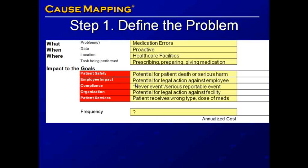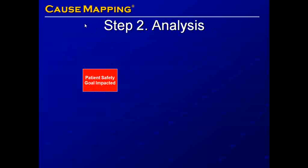The frequency will be dependent on the individual facility, so we'll just put a question mark for now. This is step one — define the problem — and this is our problem outline. Once we have completed the problem outline, we can take our impact to the goals, beginning with the patient safety goal, and move on to step two, which is the analysis.